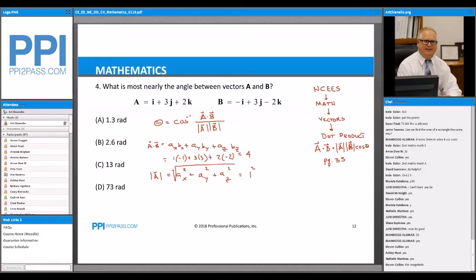So, it's equal to 1 squared, plus 3 squared, plus 2 squared, square root, is equal to the square root of 14.